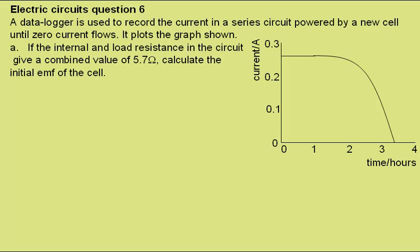Part A. If the internal and load resistance in the circuit give a combined value of 5.7 ohms, calculate the initial EMF of the cell.